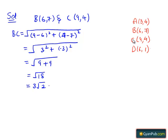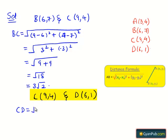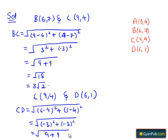Taking the next pair of points C(9, 4) and D(6, 1), by applying the distance formula we get CD = √((6−9)² + (1−4)²) = √((−3)² + (−3)²) = √(9 + 9) = √18 = 3√2.